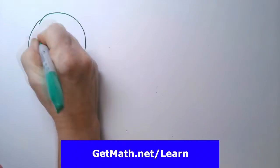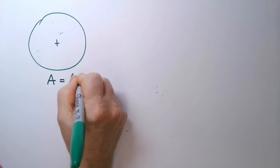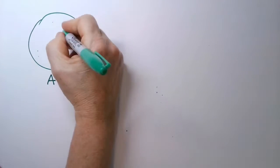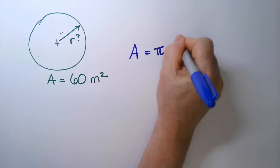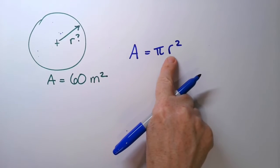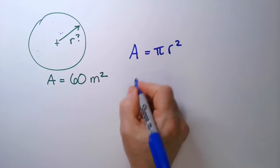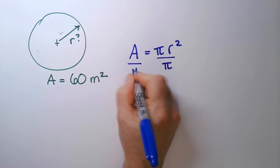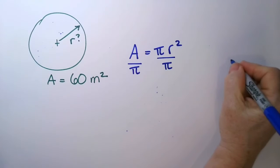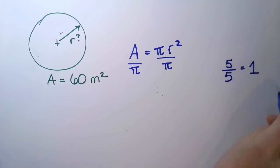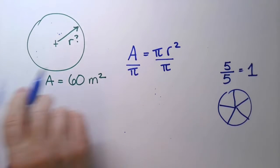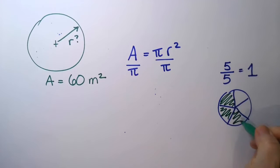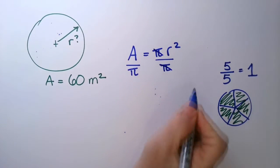Suppose I am given an area of my circle as 60 square meters, and the question is: what is the radius? We can use the equation we had before, only we're going to use it backwards. I have the area and I want the radius. So I'm going to solve for R — I'm going to divide both sides by pi. Pi over pi gives me 1, because any number with the same numerator and denominator equals 1, so they cancel out.